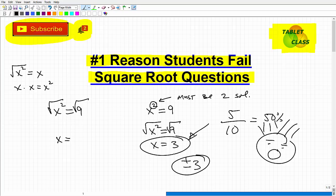So number one reason students fail square root questions is just not understanding, especially when we're dealing with real numbers, that every square root of a real number will have both a positive and negative version to it. All right, so let's just go and wrap it up from there.